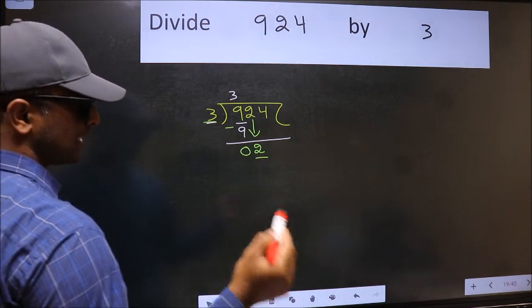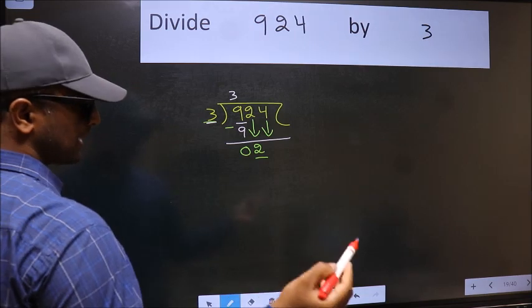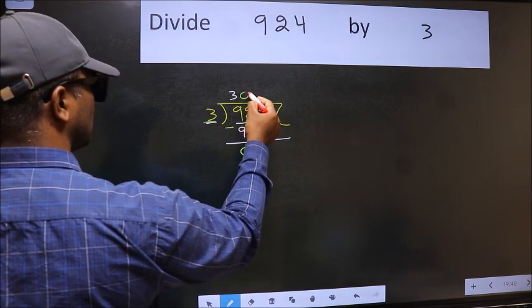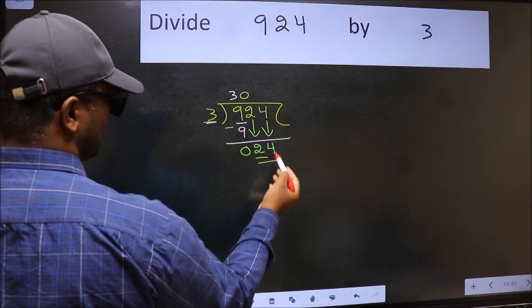So we should bring down the second number. And the rule to bring down second number is we should put 0 here. Then only we can bring this number down. Now 24.